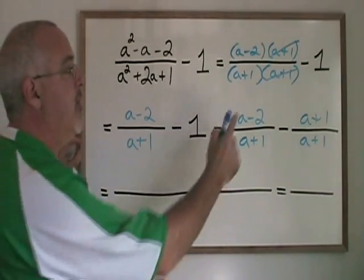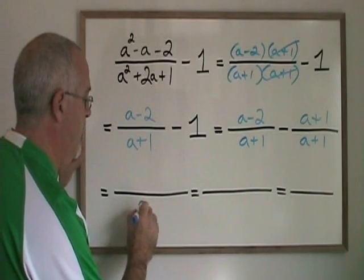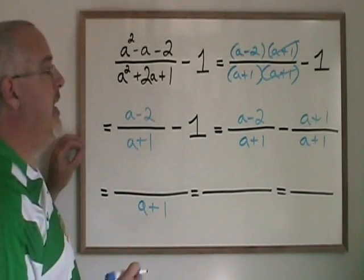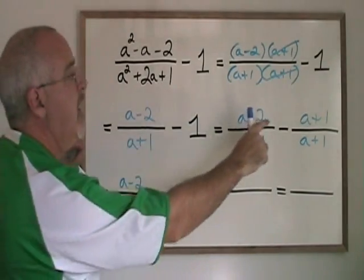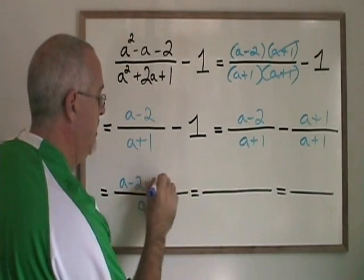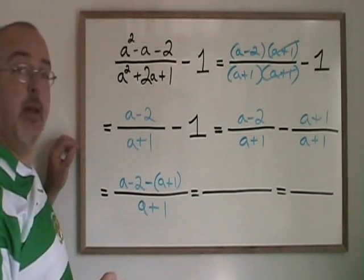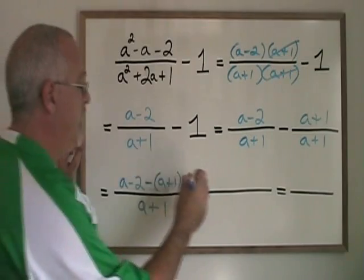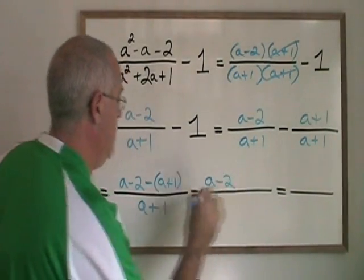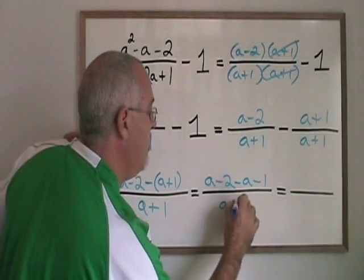Now we combine our numerators into a single fraction over the common denominator. a minus 2 minus, and then in brackets I write a plus 1, and I simplify my numerator. I have a minus 2 minus a minus 1 over a plus 1.